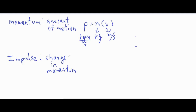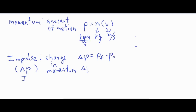Impulse is a change in momentum. The change in anything is shown with the symbol delta, so delta p — the change in momentum — is impulse, sometimes also shown with a J. You can find impulse as final momentum minus initial momentum, or m times v-final minus m times v-naught, which factors to m times the quantity v-final minus v-naught. That formula is not on the AP Physics 1 formula sheet, but it comes directly from applying the momentum formula twice.